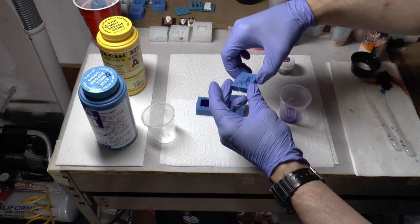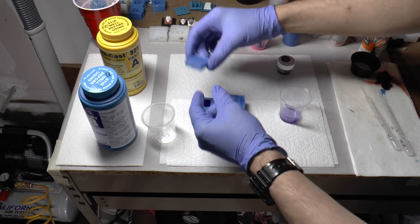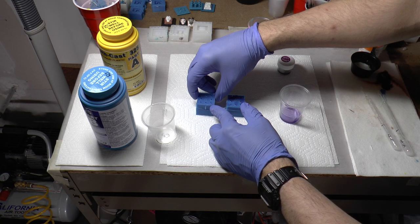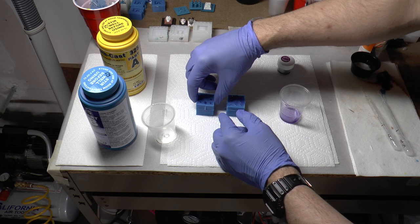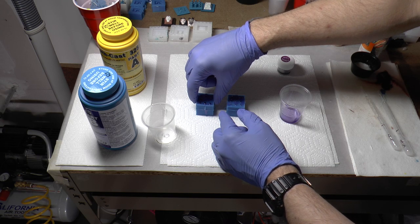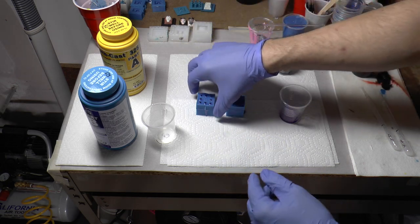So we'll do the same thing with that one. We'll put this, we call it the butt mold part of it. So we'll put that in there and do the same thing. Do a little butt wiggle. Okay and that's it.